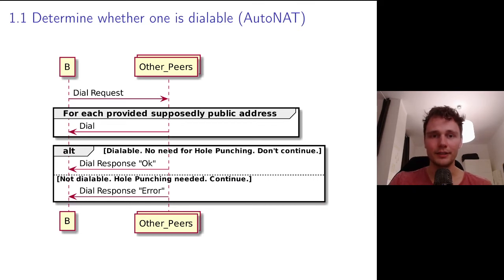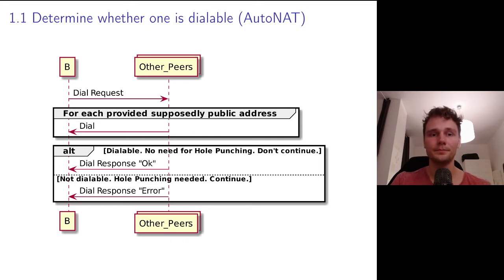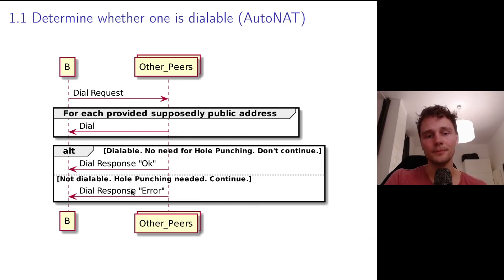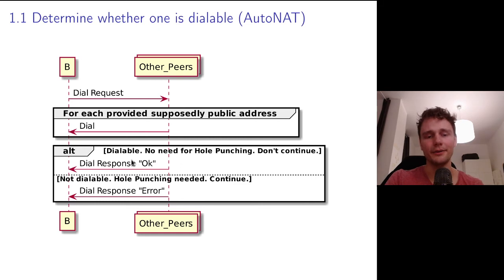The first step in Project Flare is for a node to determine whether it's dialable or not — whether nodes can reach out to it. This is called the AutoNAT protocol, analogous to STUN in ICE. What B would do is connect to a bunch of nodes within the network — likely public nodes — and ask those nodes to dial it back: essentially saying 'here are a couple of addresses I think I'm reachable under, can you try them?' Those nodes try to dial B and respond with either yes, giving the address they reached it under, or no. If yes, B is dialable and we don't need hole punching. If no, B is not dialable and we need the full hole punching stack.